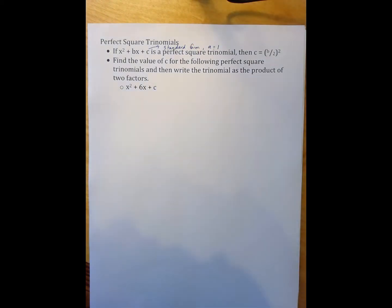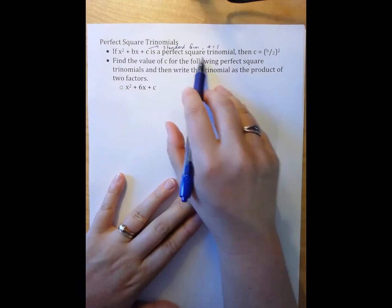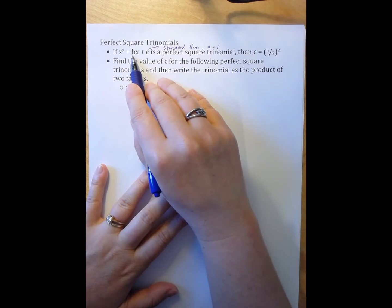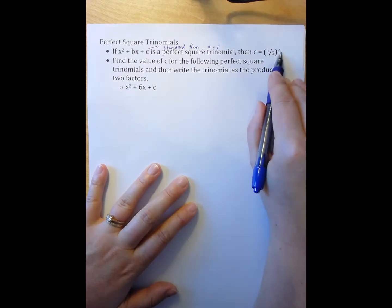You've also noticed the pattern, the relationship, that if it's a perfect square trinomial, then the c value equals the b value divided by 2 quantity squared.